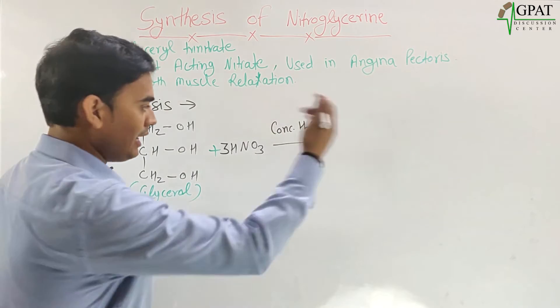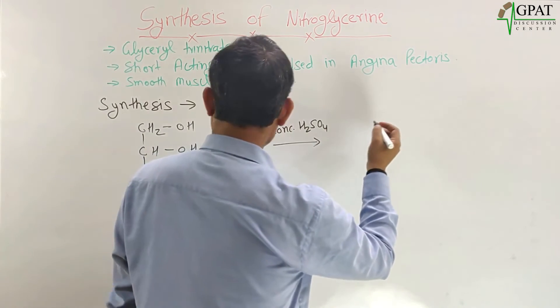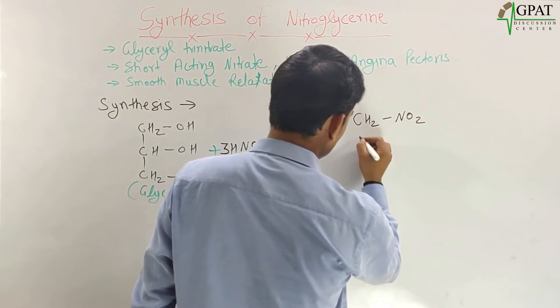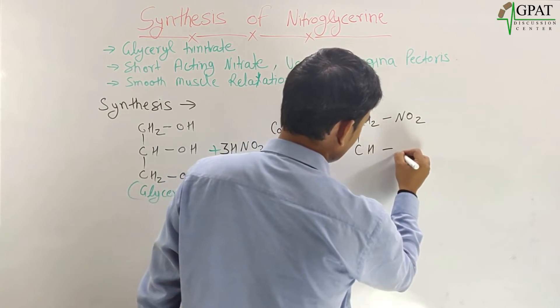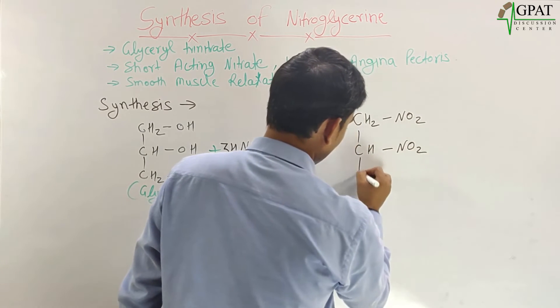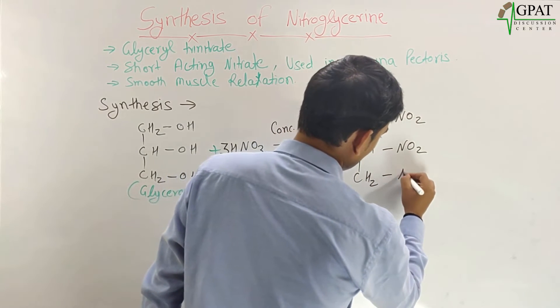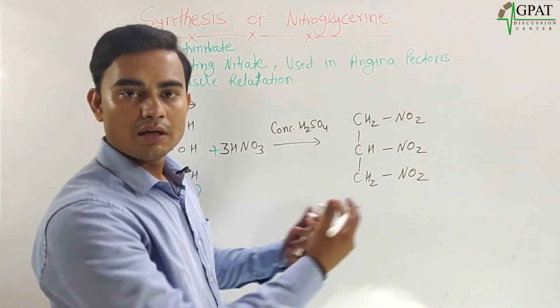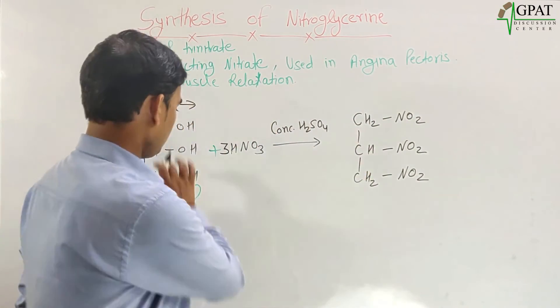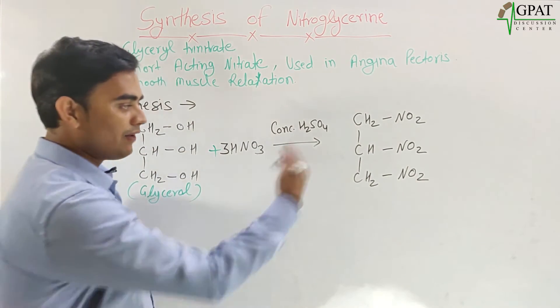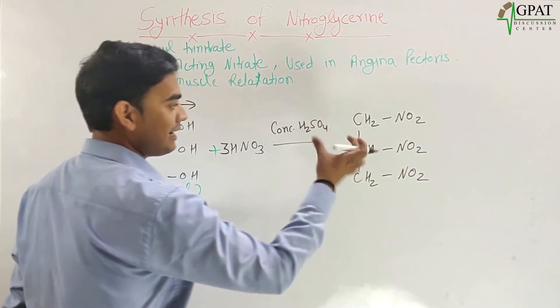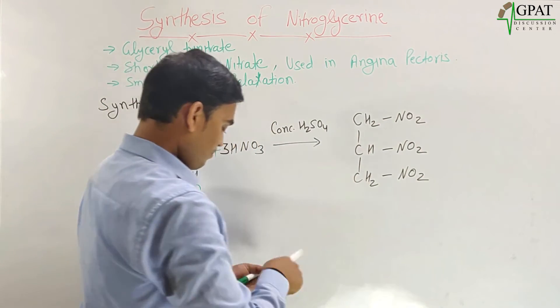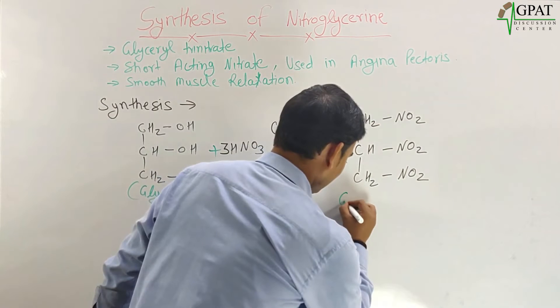And further our final compound here forms CH2-NO2, CH-NO2, and here CH2-NO2. So here three nitrate groups joined in this molecule, and finally it becomes glyceryl trinitrate.